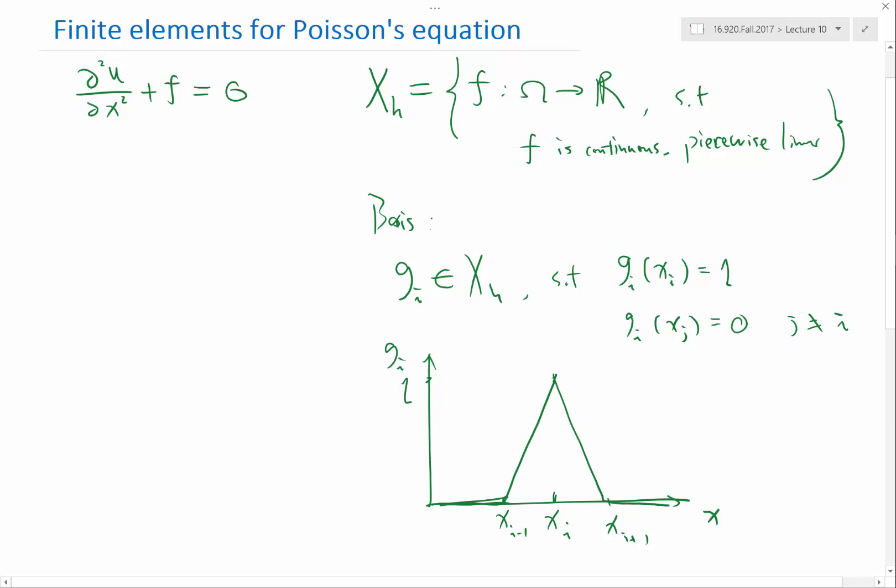This is a basis of this linear function space, which means any function in X_h I can represent exactly as a linear combination of these basis G_i's. This linear combination is unique because G_i as a set is a basis. If it's not unique, then you can mathematically show that the G_i's cannot be linearly independent. You could represent one of the G_i's with a linear combination of the other G_i's, which cannot be true by the definition of the basis.